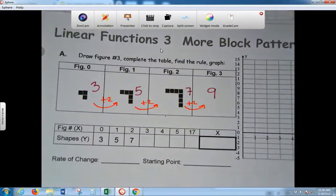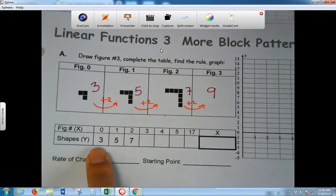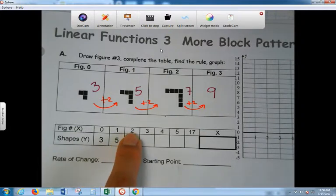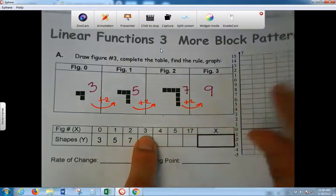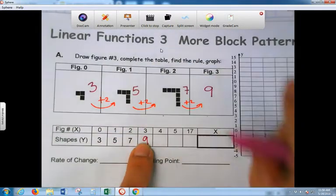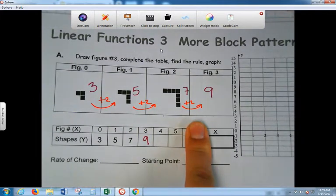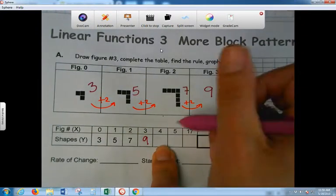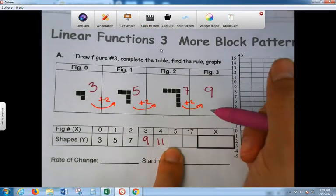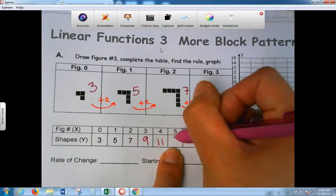Okay, so the table's already started for you. Figure 0 is 3, Figure 1 is 5, Figure 2 is 7, Figure 3 is 9. Okay, go ahead and fill it out. Leave 17 blank. Okay, what did you guys put for 4? 7. And 5? 13. Good.